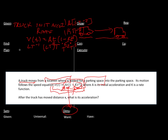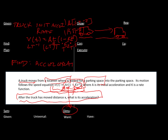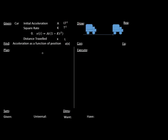After the truck has moved a distance x, what is its acceleration? We want to find the acceleration at position x — that is, a(x) rather than a(t). A(t) would just be the first derivative of the velocity function, but we want it in terms of x, so that's going to give us a little more work. We can assume that we know the distance traveled x, with units L.